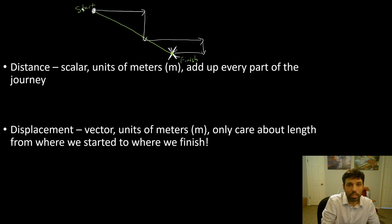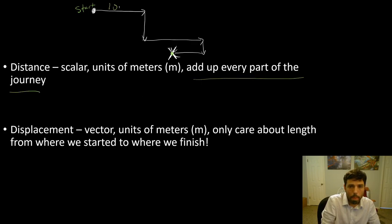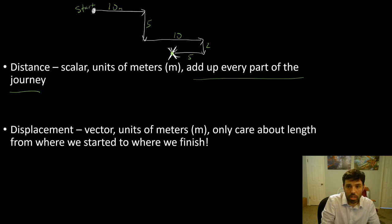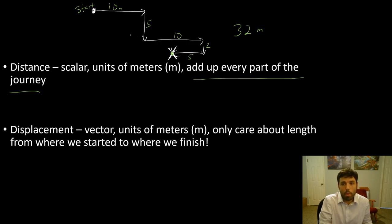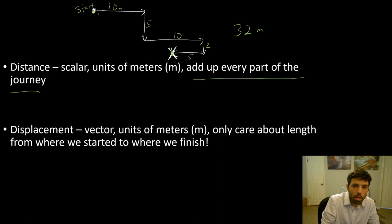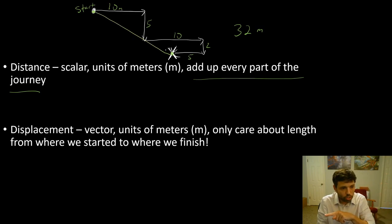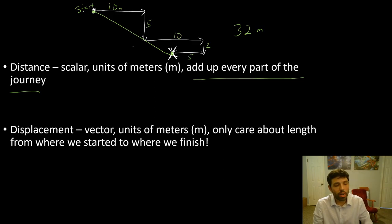For distance, we do care about what we did in between. We add up every part of the journey: 10 meters right, plus 5 meters down, plus 10 more right, plus 2 meters down, plus 5 meters left — that's 32 total meters. There's no direction for distance because you went multiple directions. But for displacement, since it's only one straight line from start to finish, you can assign a single direction to it.